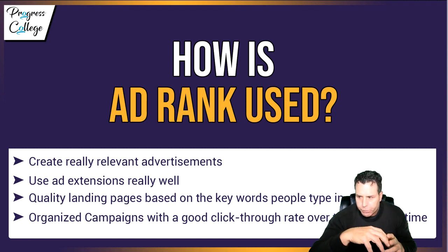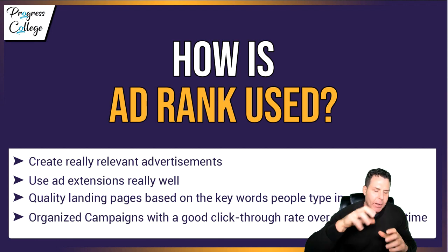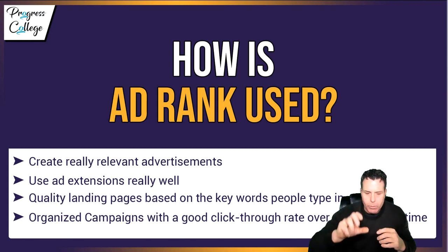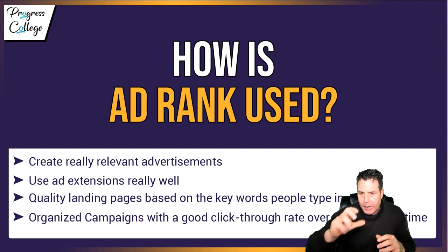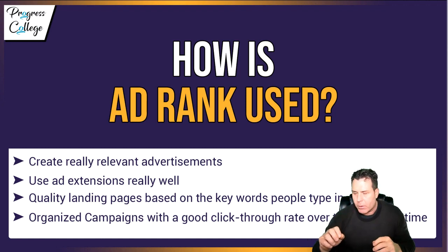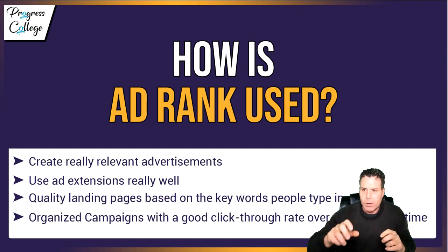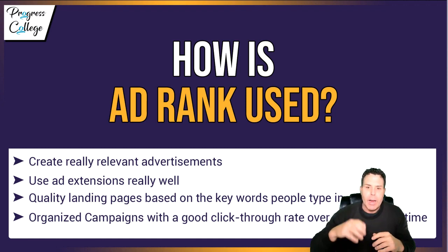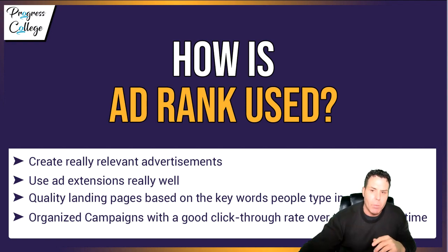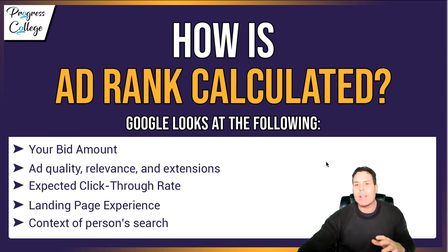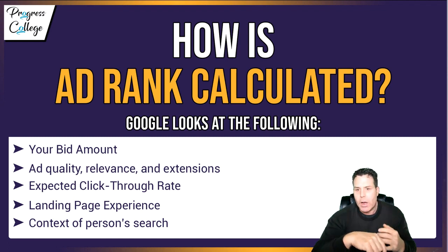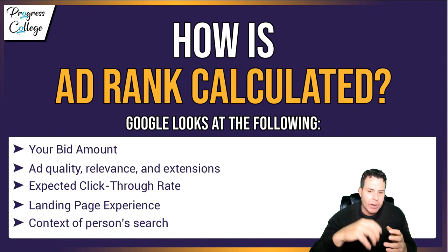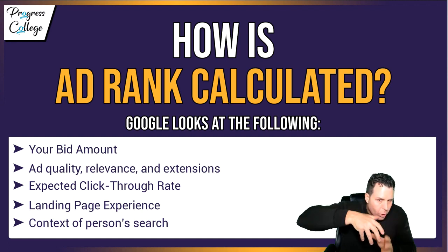In your ads, you want ad groups that are very tightly positioned to the main keyword you're going after. So Las Vegas plumbers emergency, Las Vegas plumbers 24 hours — those are all very similar words. You want to keep those in one ad set and bid on those keywords based on that particular ad set. So how is ad rank actually calculated? Your bid amount, your ad quality, relevance, and extensions all play a role. Your expected click-through rate — which comes from the history of your ad account — and the landing page experience and the context of the person's search all work together to form your ad rank.